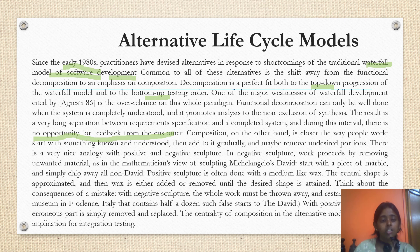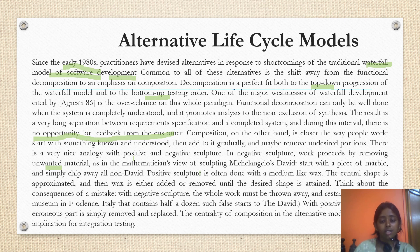There is a very nice analogy with positive and negative sculpture. In negative sculpture, work proceeds by removing unwanted material — as in the mathematician's view of sculpting Michelangelo's David: start with a piece of marble and simply chip away all non-David. Positive sculpture is often done with a medium like wax. The central shape is approximated and then wax is either added or removed until the desired shape is attained. Think about the consequence of a mistake: with negative sculpture, the whole work must be thrown away and restarted — there is a museum in Florence, Italy that contains half a dozen such false starts to David. With positive sculpture, the erroneous part is simply removed and replaced. This centrality of composition in the alternative models has implications for integration testing.